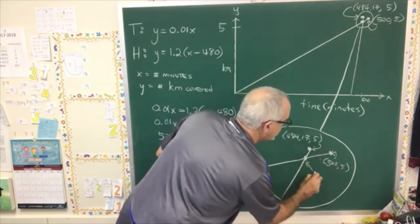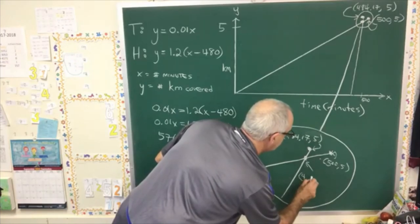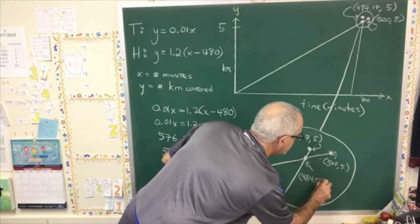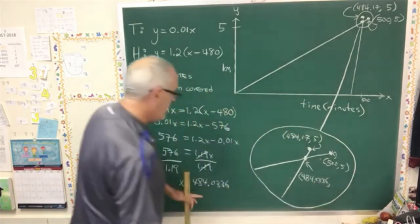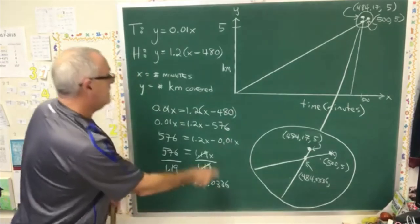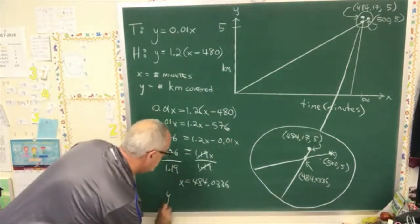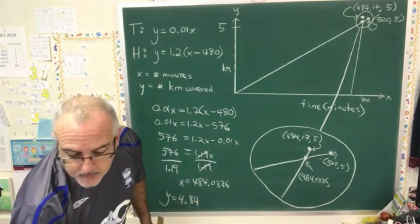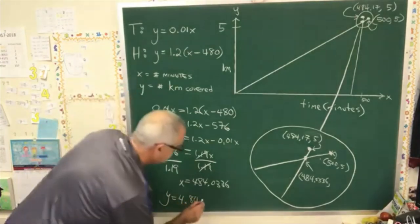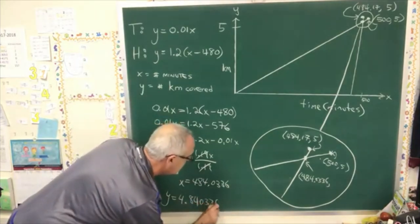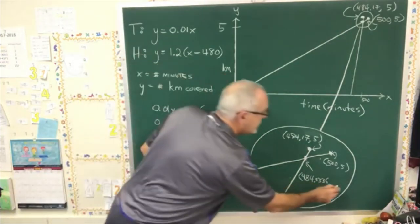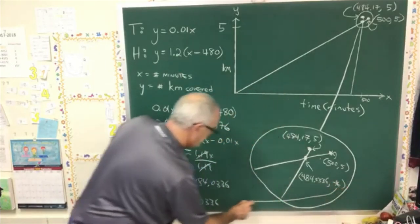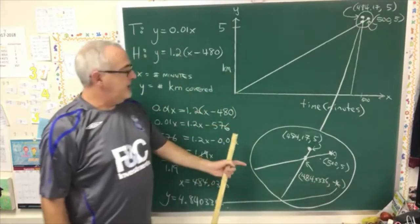And here's the point of intersection, which happens when x is equal to 484.0336. And the y, if we plug this into one of the original equations, we get a y of 4.840336. That's going to be the y-coordinate of this point. Which I can't show even in my expanded view of the graph.